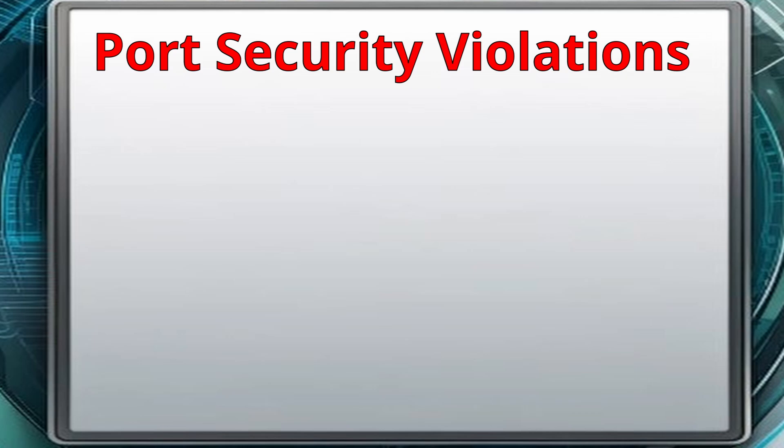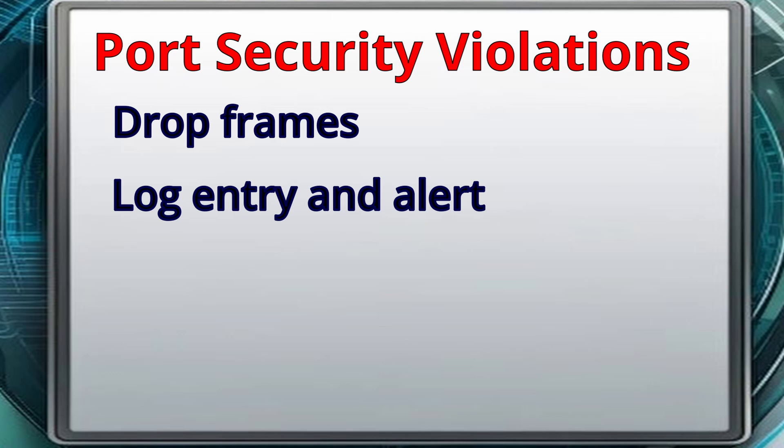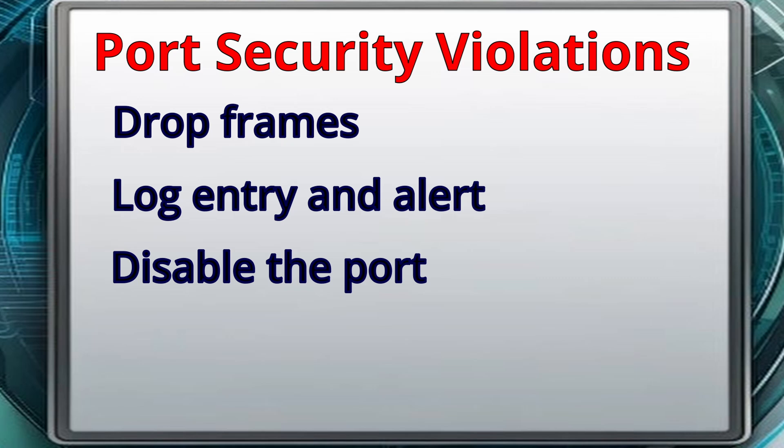When a port security rule violation occurs, the switch may react differently depending on its configuration. This might be implemented differently by different switch manufacturers, but the actions are usually closely related. For the least restrictive action, the port simply drops frames from the offending device, and the port remains operational with nothing reported in the logs. Another setting tells the switch to not only drop the frame, but send an alert and log the offending operation. The third most restrictive violation disables the port when a violation is detected, which requires intervention to re-enable the port and is the default violation mode.